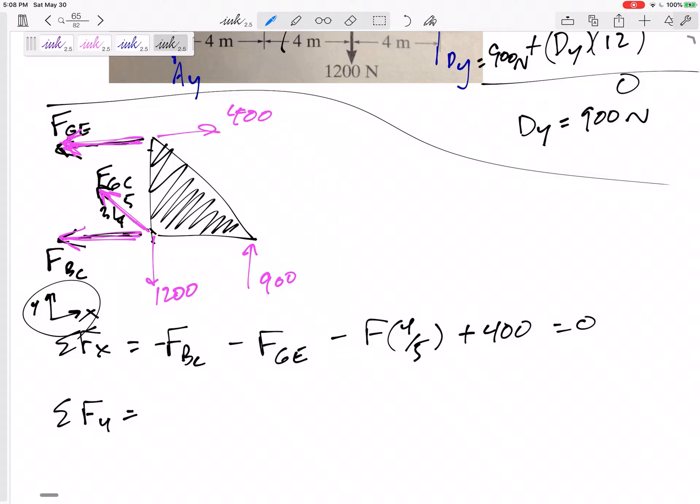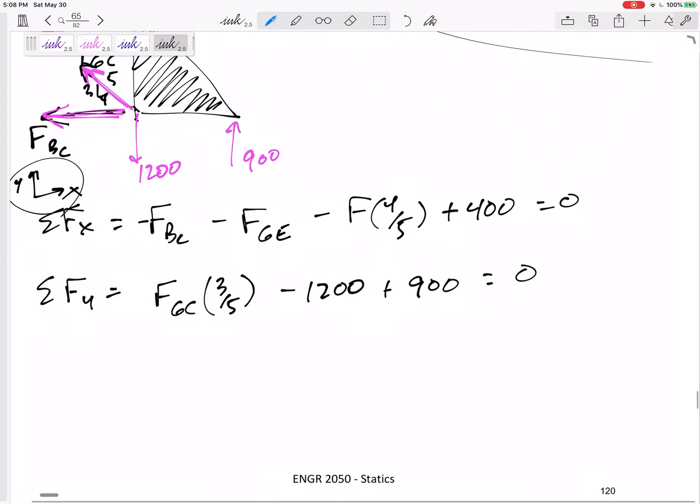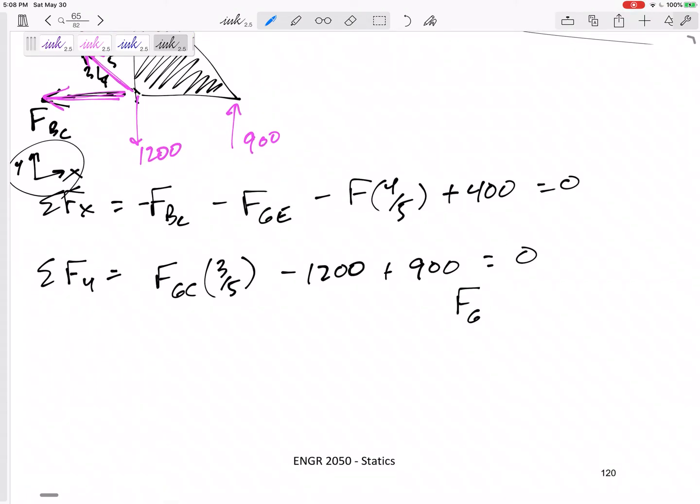Sum of the forces in the y-direction. F_CG, the three-fifths component, is going up. 1200 is going down. 900 is going up. Set that equal to zero. There I can solve, one equation, one unknown. I would get positive 500. What does that mean? Positive means I guessed right. What did I guess? I guessed tension. Box that in. This is GC. I would plug that back in up there, but I still can't solve. Use that equation.